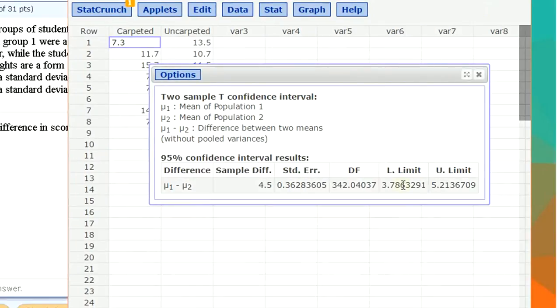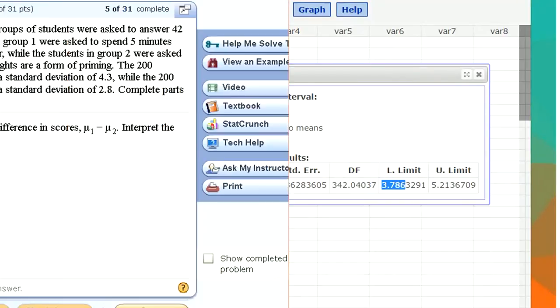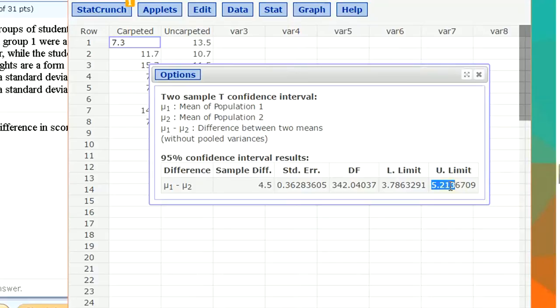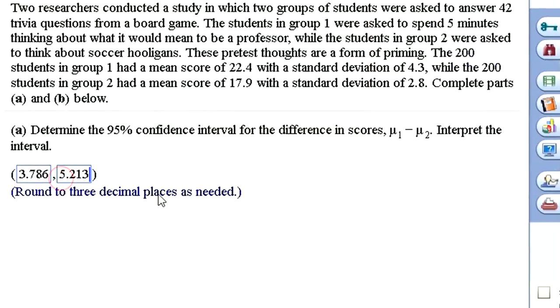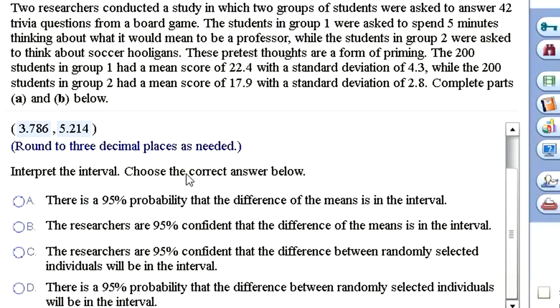Let's move it over. We've got from 3.786 to 5.213. I'm rounding that up to 214 to get three decimal places. Hit enter. So we would say that we can be 95% confident the difference of means is in the interval. That's how we interpret a confidence interval.